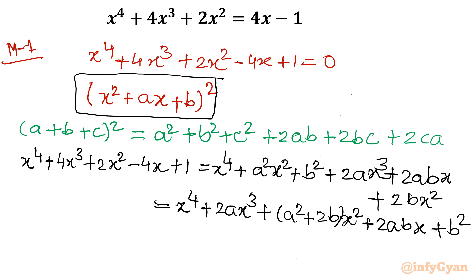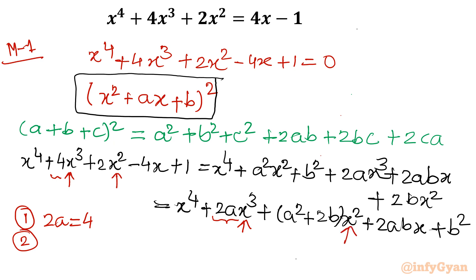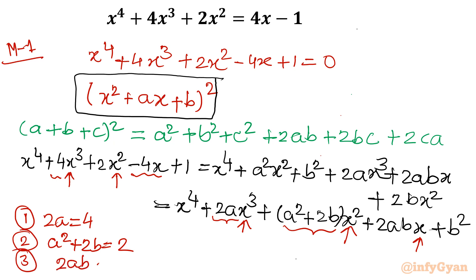Now let's compare both sides by their coefficients. Looking at the coefficient of x³ on both sides, we get equation 1: 2a equals 4. Then looking at the coefficient of x², we get equation 2: a² plus 2b equals 2. And the coefficient of x gives equation 3: 2ab equals negative 4.